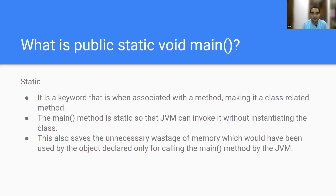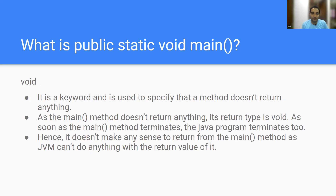Now, void is also a keyword used to specify that a method does not return anything. When you say void, there is no return statement in the function. If you need output from one function to use in another — say function A reads a value used in function B — you use a return type. But if you don't need anything returned, you use void. The return type of main is void because once the main method terminates, the Java program terminates — there's no point returning a value.